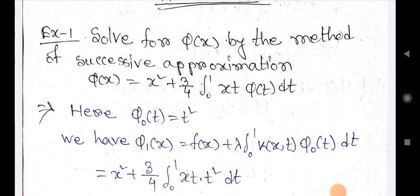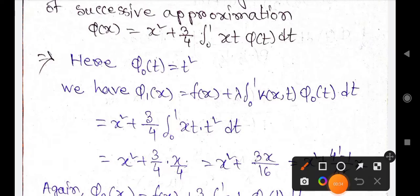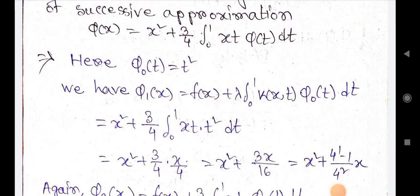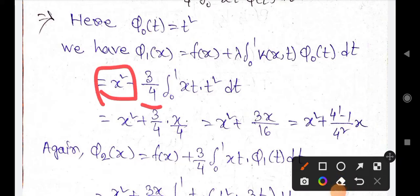Example 1: Solve for φ(x) by the method of successive approximation. φ(x) equals x² plus (3/4) times the integral from 0 to 1 of xt·φ(t) dt. Here φ₀(t) = t² = f(t). We have φ₁(x) = f(x) + λ·∫₀¹ k(x,t)·φ₀(t) dt, where f(x) = x², λ = 3/4, k(x,t) = xt, and φ₀(t) = t².